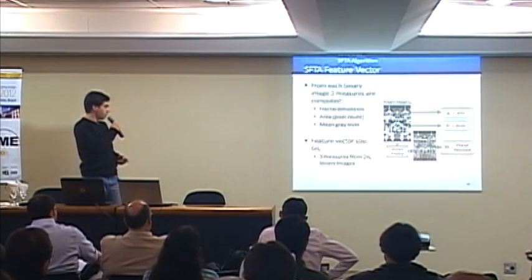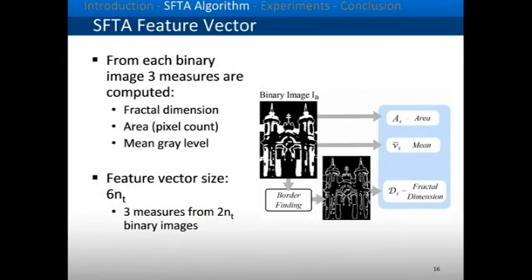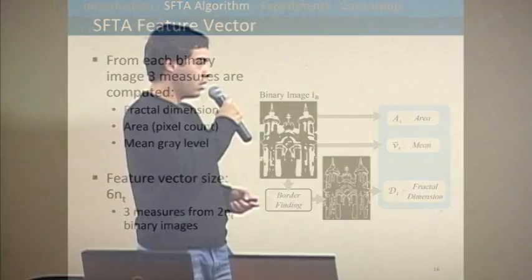Here is how we build our feature vector. For each binary image, we compute three features: the area, which is the pixel count of the highlighted region; the mean gray level of the region; and the fractal dimension from the border of the region.